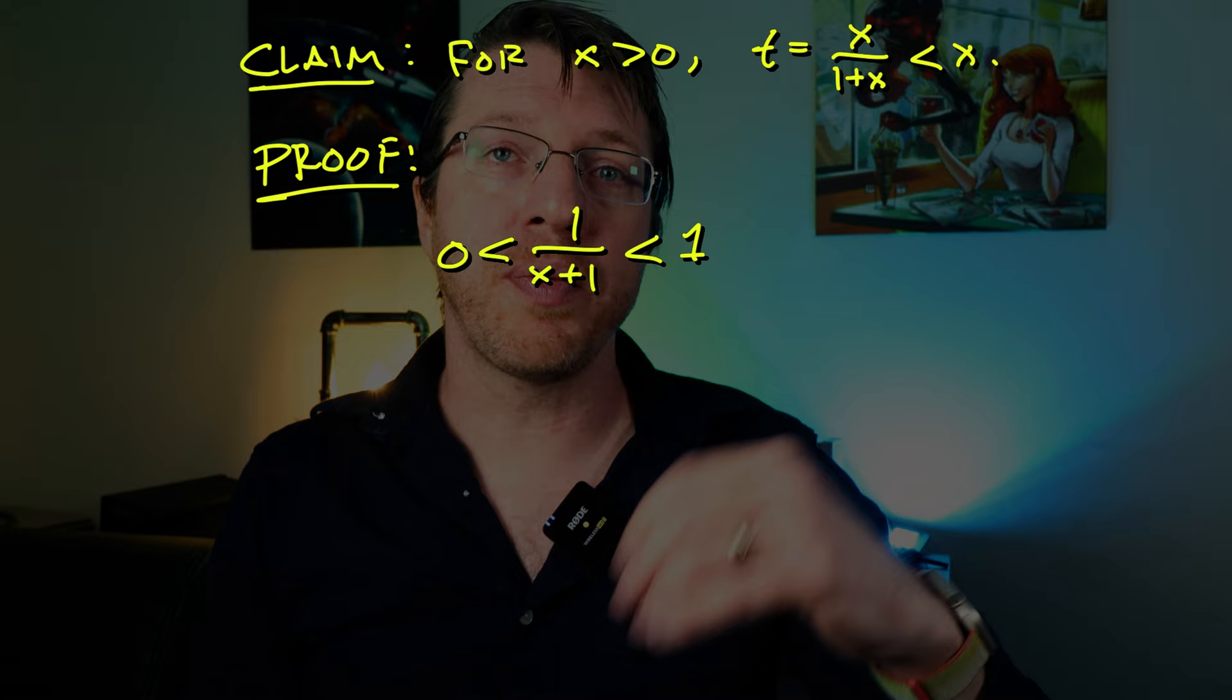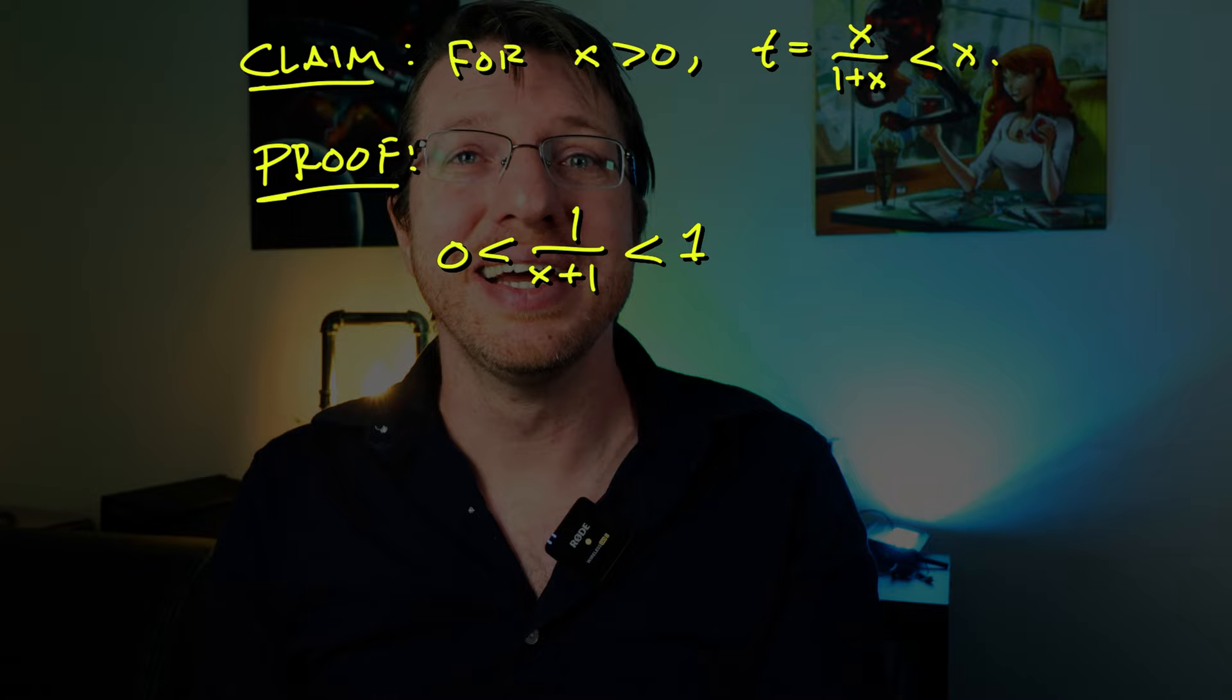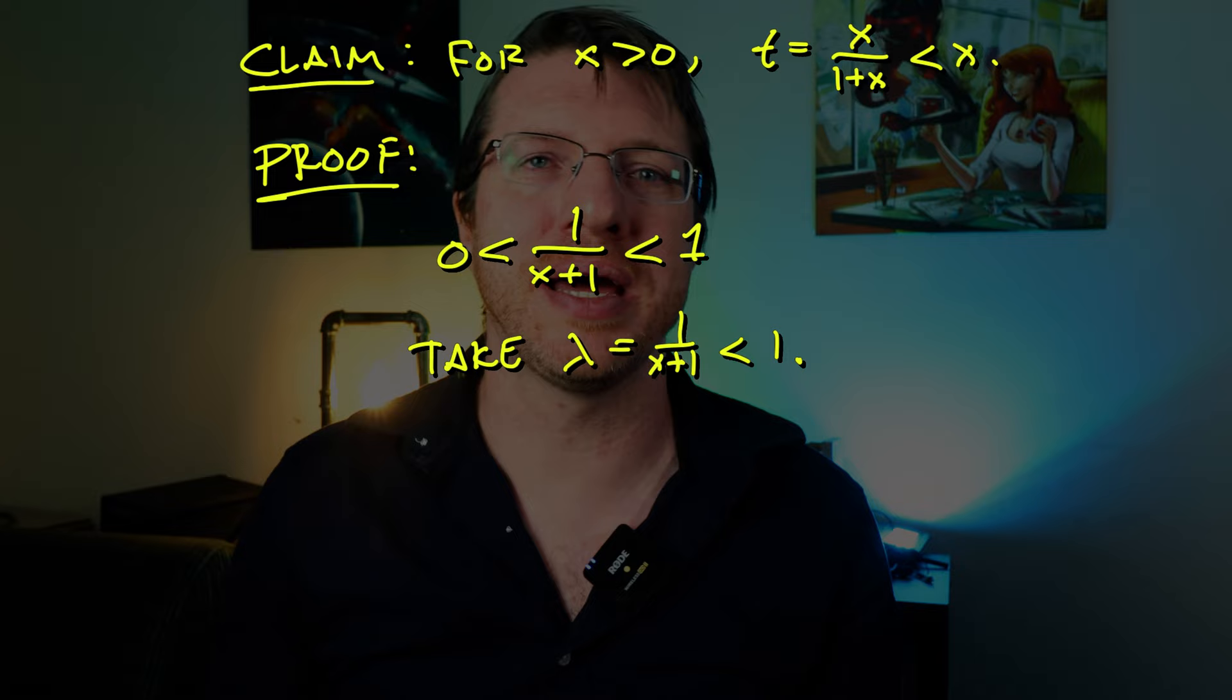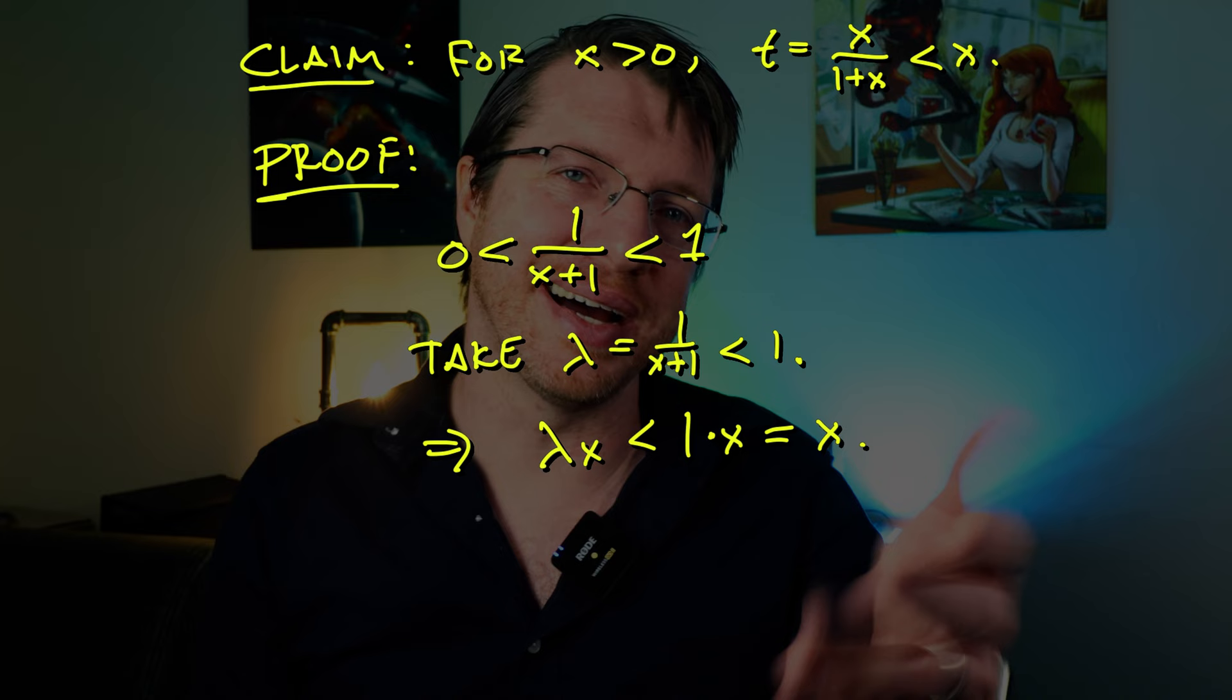So we need to show that t is indeed less than x for any positive x. How would we do this? Well, if we see that t is equal to x times 1 over x plus 1, we already have shown that 1 over x plus 1 is a positive real less than 1. So what we really want is a lemma that says that for positive x, the real number x times lambda is less than x for lambda, a positive real less than 1. This is really straightforward. Take lambda less than 1 and proposition 1.18b says that if we multiply both sides by a positive number, we maintain the inequality. So x times lambda is less than x times 1, which is just x. Hence, t is less than x.